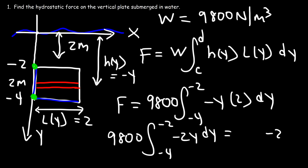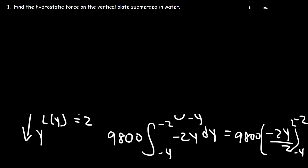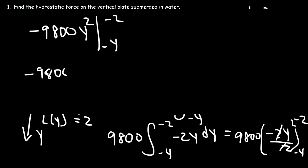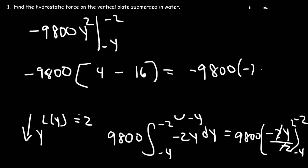The antiderivative of negative 2y is negative 2y² over 2, multiplied by 9800, evaluated from negative 4 to negative 2. Canceling the 2 gives negative 9800 times y² evaluated from negative 4 to negative 2. Plugging in: negative 2 squared is 4, negative 4 squared is 16, so it's negative 9800 times (4 minus 16), which is negative 12.